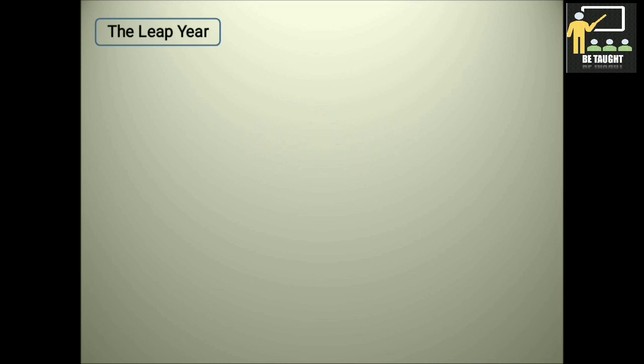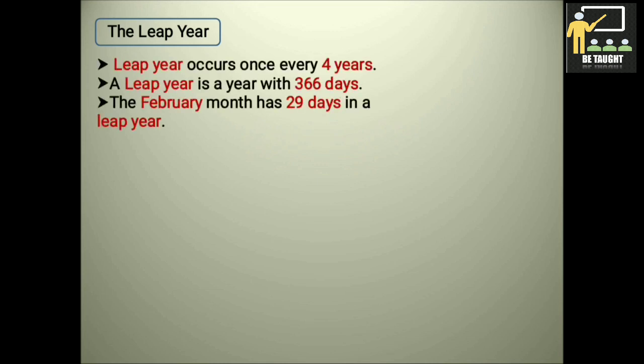Now we shall learn about the leap year. Leap year occurs once every 4 years. A leap year is a year with 366 days. So normally in a year there are 365 days, but when it is a leap year, we have 1 day extra, so it is 366 days. The February month has 29 days in a leap year.